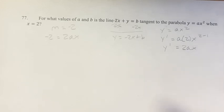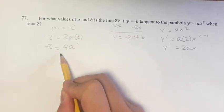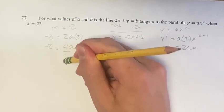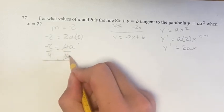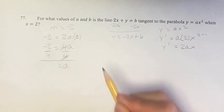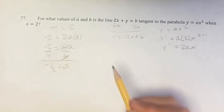And then when is this the case? When x equals 2. So we get negative 2 equals 4a, dividing by 4 on both sides, we get a equals negative 2 over 4, which is negative 1 half.